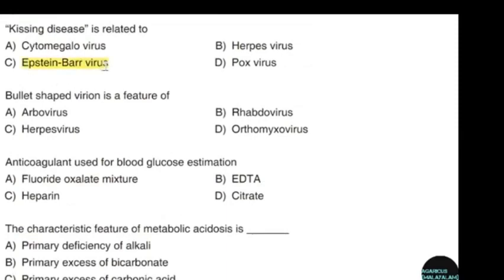Bullet-shaped virion is a feature of — correct answer option B: Rhabdovirus.